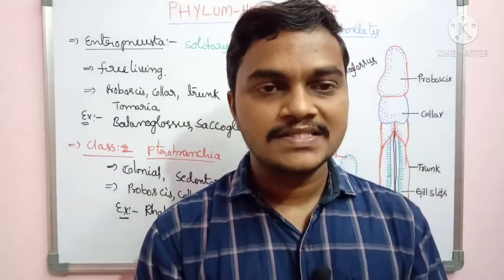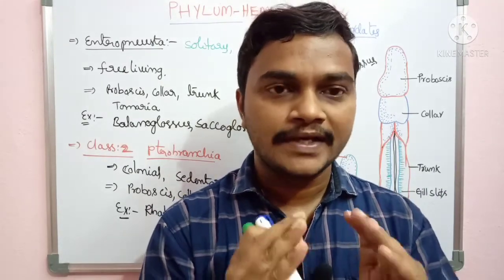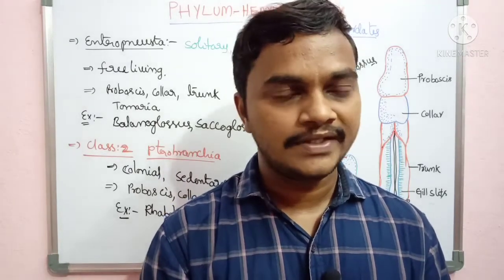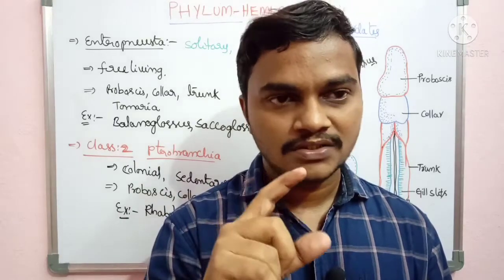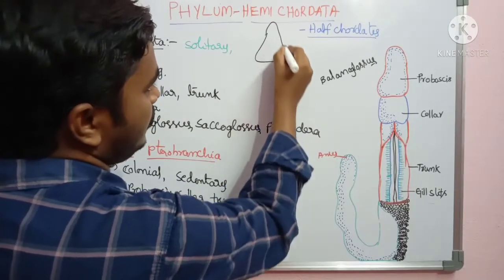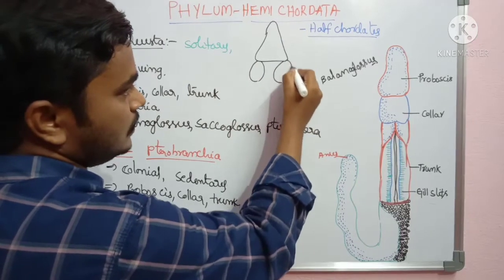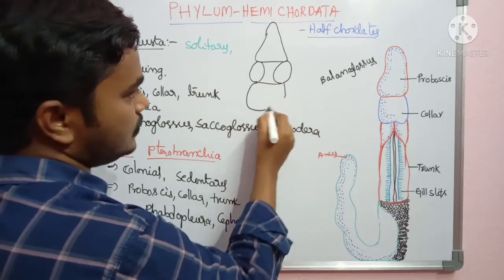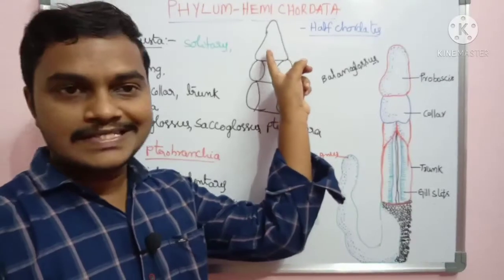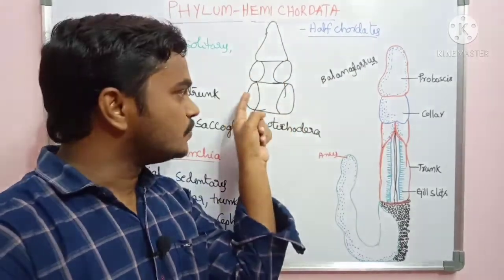The coelom is divided into five cavities in hemichordates. In Balanoglossus, the coelom is distributed as follows: the coelom is unpaired in the proboscis region, then paired in the collar region, and also paired in the trunk region.